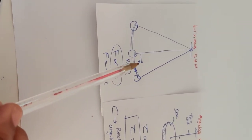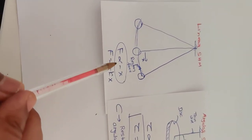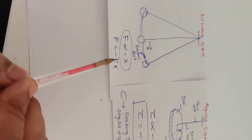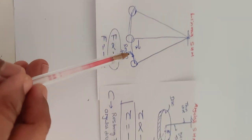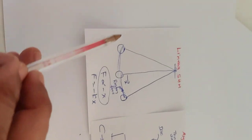But they're oppositely directed. And therefore, F is proportional to minus X, F equal to minus X. It used to go to the left, right, left, right - to and fro motion.